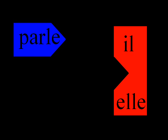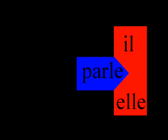Now let's look at the il-elle in the rouge and the parle in the bleu. It looks like parle can fit nicely into il-elle, right? Let's see. Boop! Can you think of what made them fit? Your answer should be: because the E on parle makes it fit. So for il and elle, you should always put an E on the end of your verb.